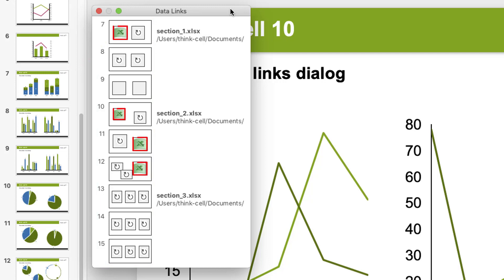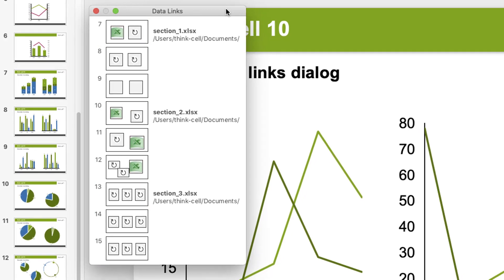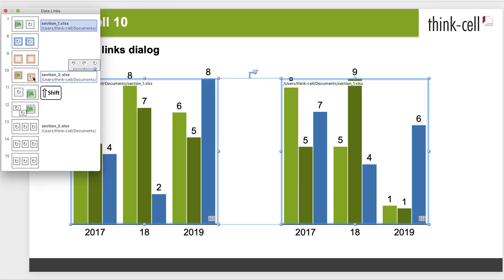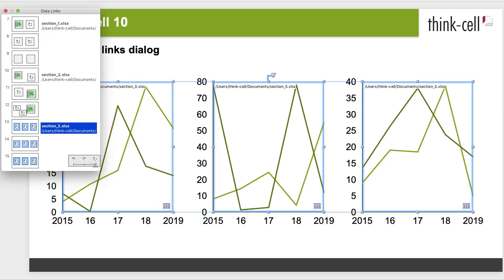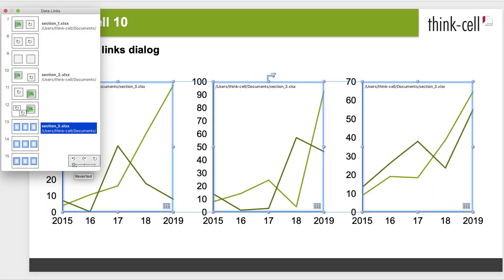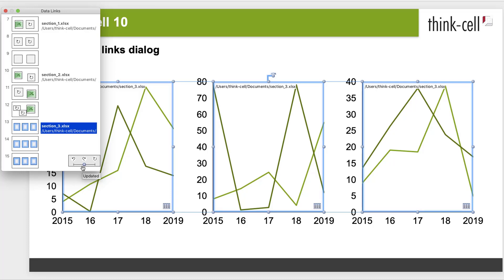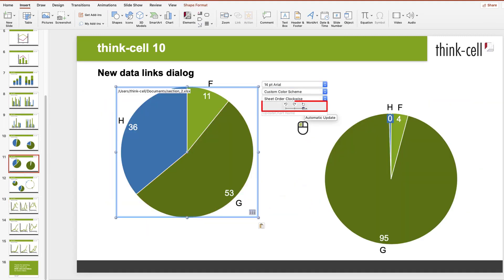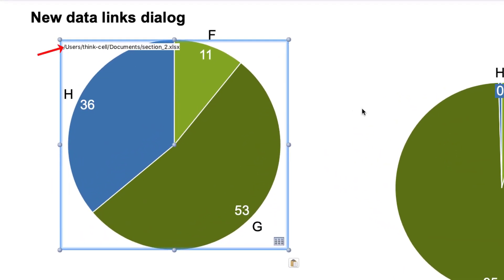Pending updates are clearly marked on the thumbnails. In ThinkCell 10, it is much easier to multi-select several linked charts, either from a range of slides or from a common source file. Keeping charts in their previous PowerPoint state, manually updating them to their current Excel-driven state, or setting them to automatic update, is now as simple as pushing a slider. You can also find the same slider in a linked chart's floating toolbar, and each linked chart shows its Excel source file when selected.